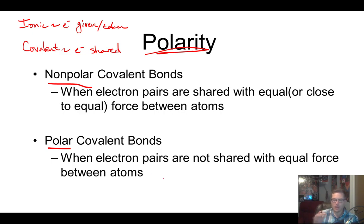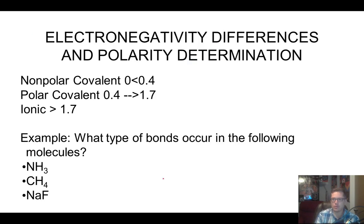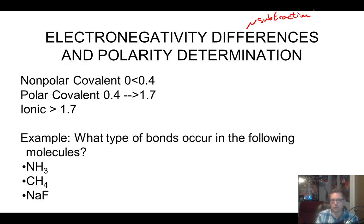The more electronegative, the more of a difference there is between the two atoms, the more the electrons will be pushed from one side to the next. So it's all based on their electronegativity difference — and by difference, remember, this essentially means subtraction. So we're going to simply subtract the electronegativity of the two elements that are being bonded together, and based on that number, that's whether or not they're polar or non-polar.